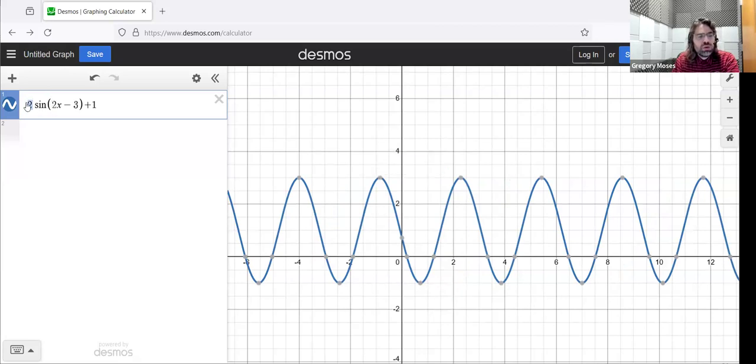So the number in front of the trig function, and only the number in front of the trig function, controls the amplitude.